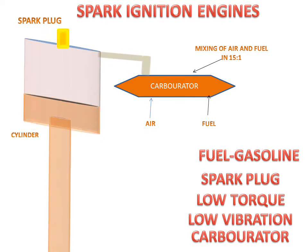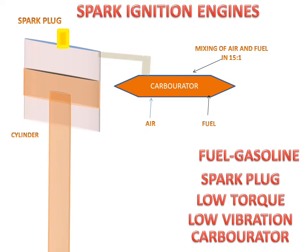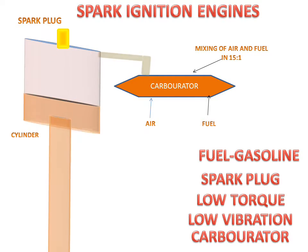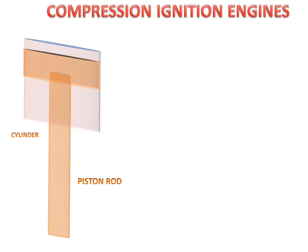Now we will discuss the compression ignition engine. Its parts include a cylinder with a piston rod and connecting pipe, and instead of a spark plug, it has an injector.